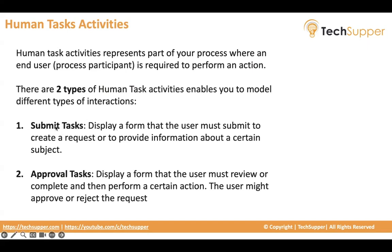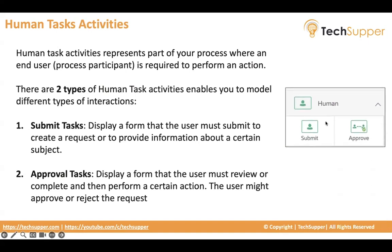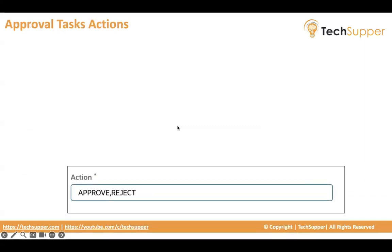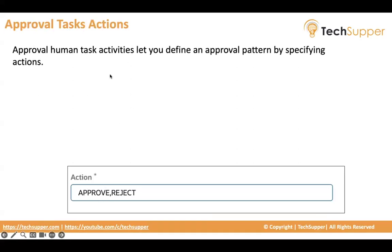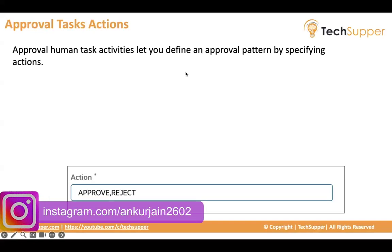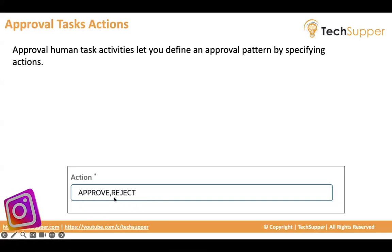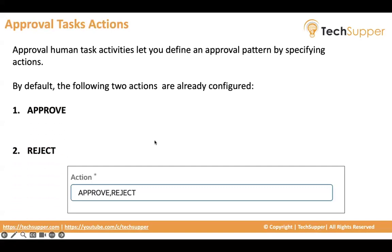Submit task is used when, for example, a user rejects a task and it goes back to the requester. It displays a form that the user must submit to create a request or provide information about a subject. By default, approval task actions have two custom actions: approve and reject. You can define an approval pattern by specifying actions — these two are configured by default, but you can add more comma-separated actions.